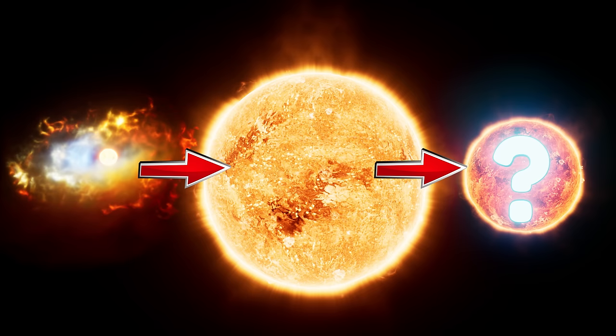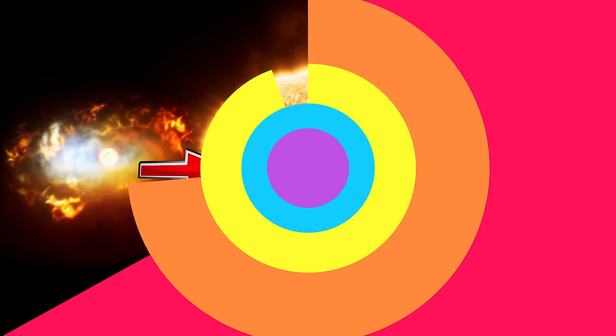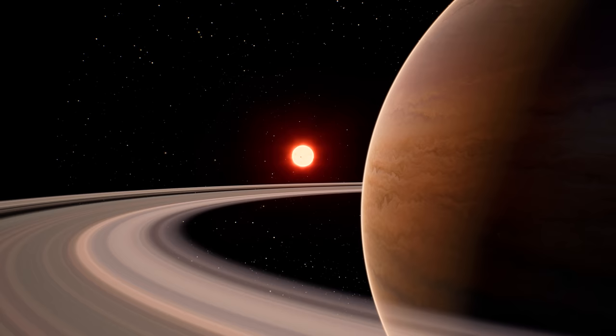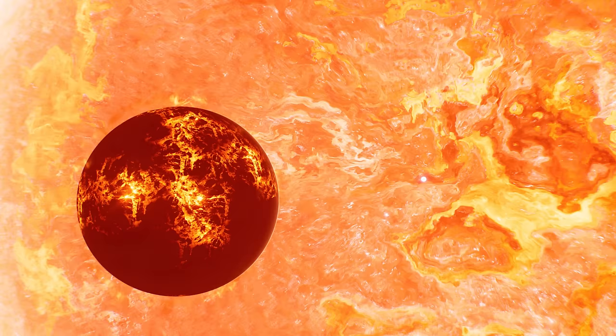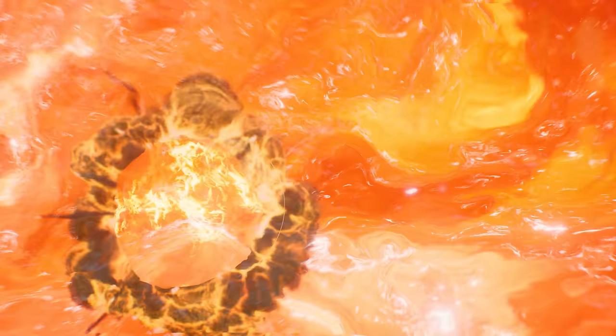But what happens when a star runs out of hydrogen gas for its nuclear fuel? Well, some pretty awesome stuff happens! When an average-sized star like our Sun runs out of fuel, its outer layers will slowly expand to over 100 times its size, and it becomes a red giant. This will cook the inner planets of the solar system, but our Sun has enough hydrogen fuel for another 5 or 6 billion years, so none of us have to worry about that.